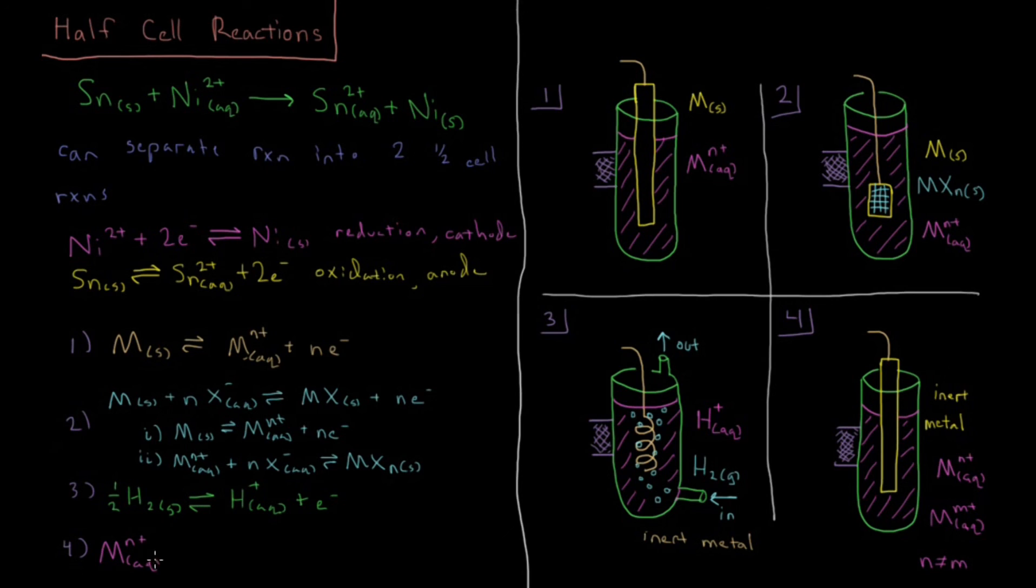So you have an aqueous ion with some charge N, and then it goes to an aqueous ion of some greater charge M, and then it produces however many electrons are the difference between those.